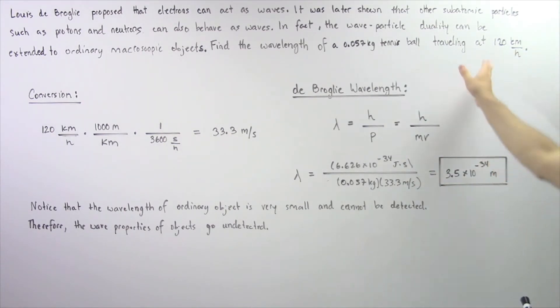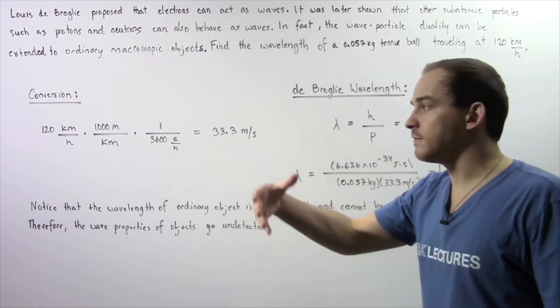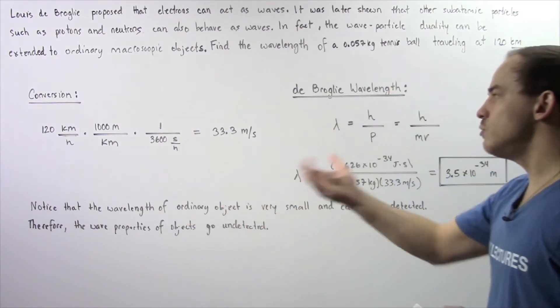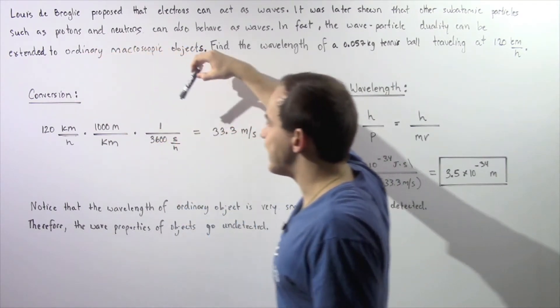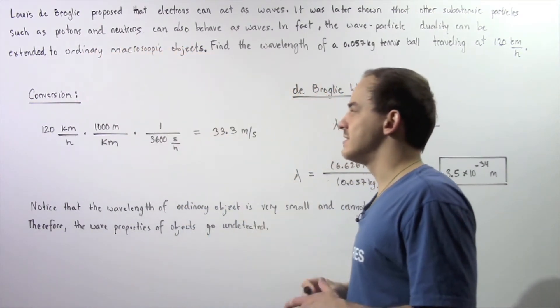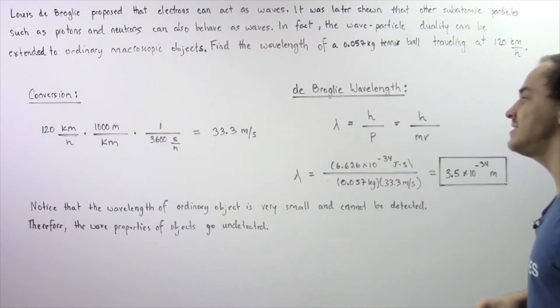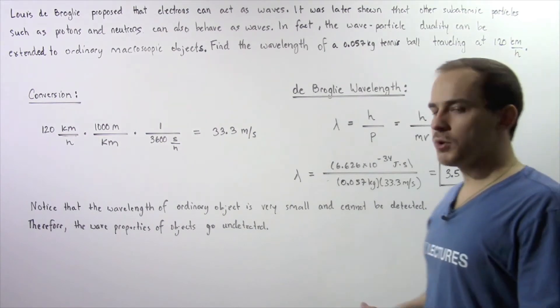Now let's first take our velocity and convert that from km an hour to meters per second. So we multiply 120 by 1000 and divide by 3600 and we get a velocity of about 33.3 m per second.